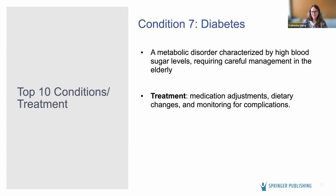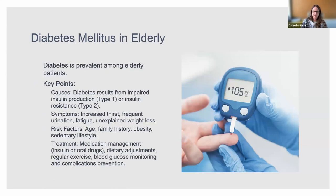Number seven is diabetes — a huge issue in elderly patients. It's a metabolic disorder characterized by high blood sugar, requiring careful attention, medication adjustments, dietary changes, and monitoring of complications. You can have type one and type two. Type two insulin resistance comes with years of poor diet, lack of exercise, environmental toxins — the body is under attack for a long period of time and it manifests frequently in elderly patients. First symptoms include increased thirst, frequent urination, fatigue, and unexplained weight loss — these should alert anybody to first think of diabetes.